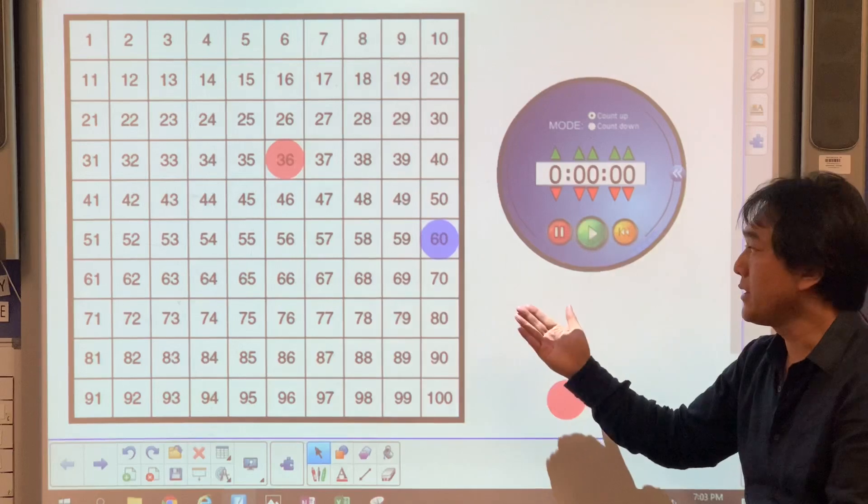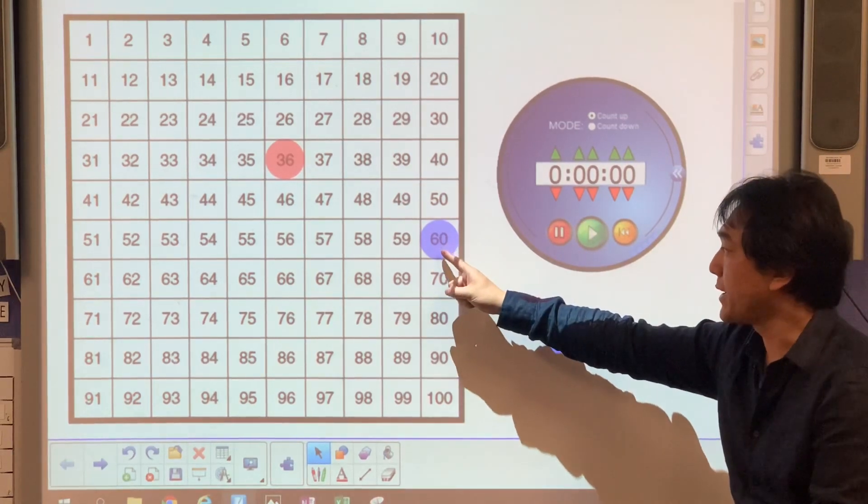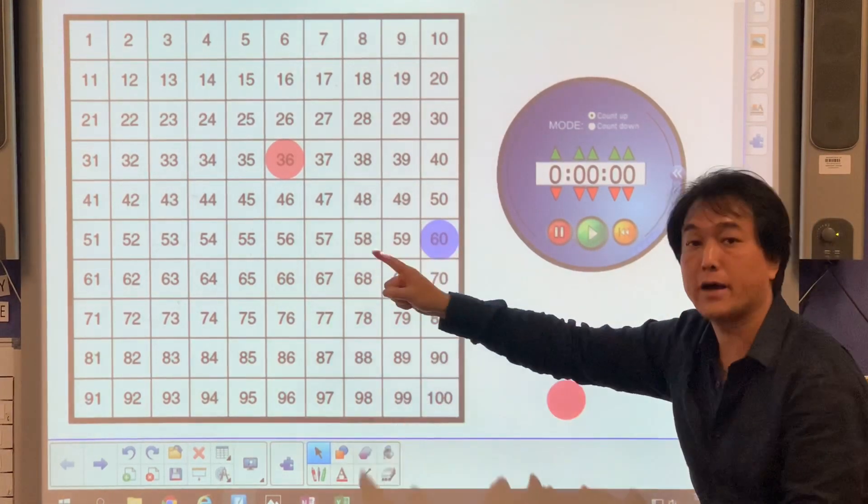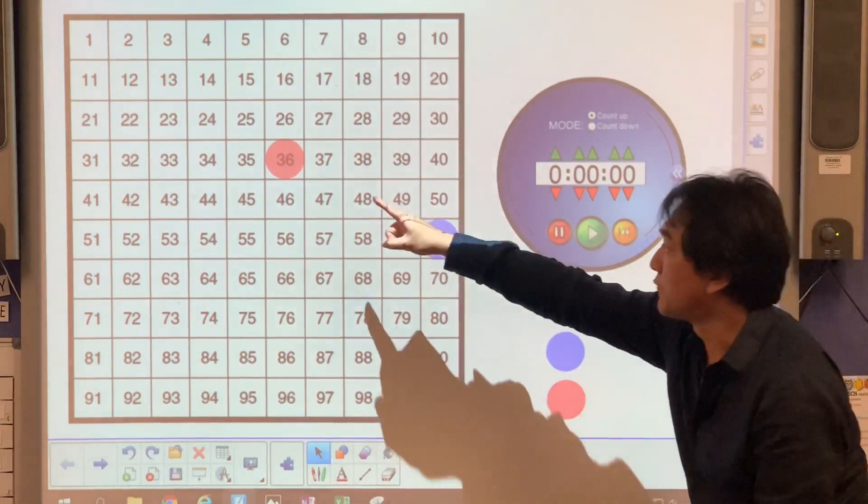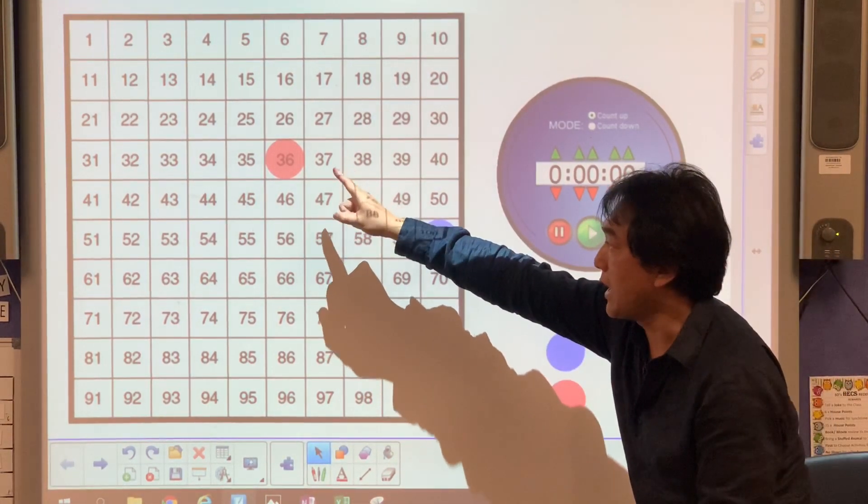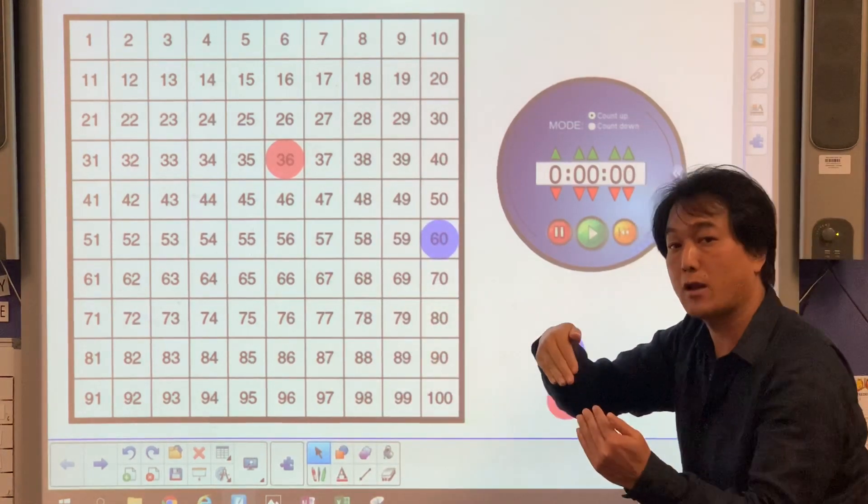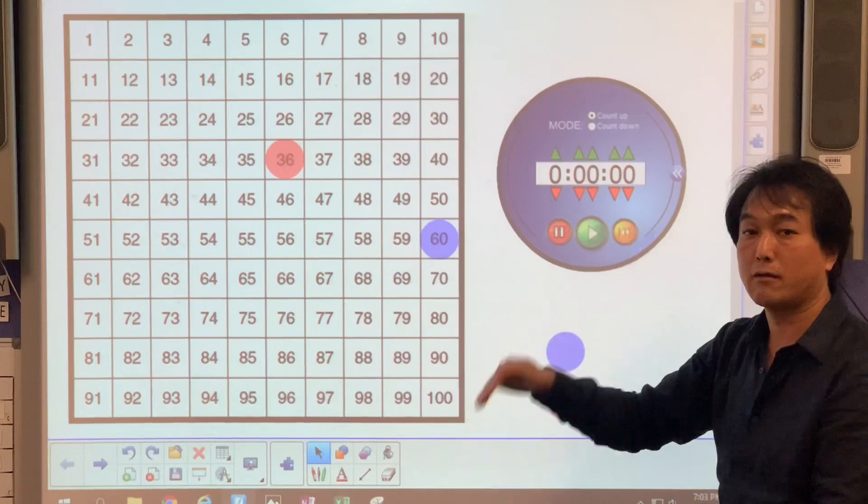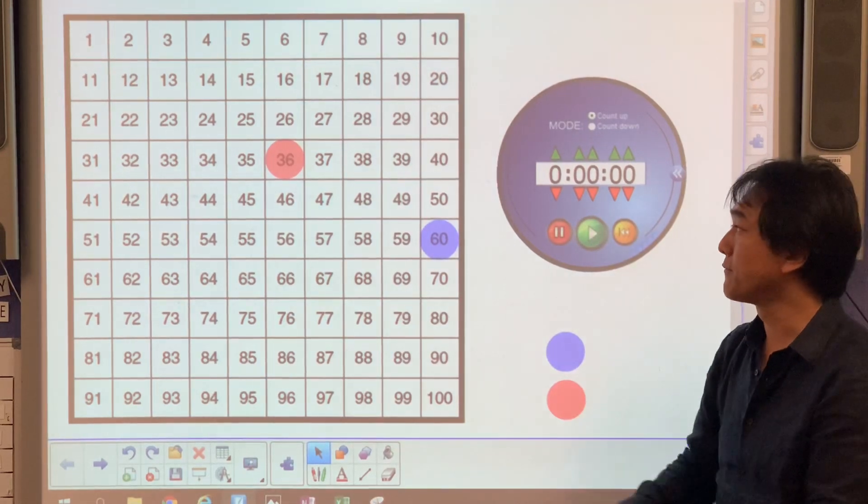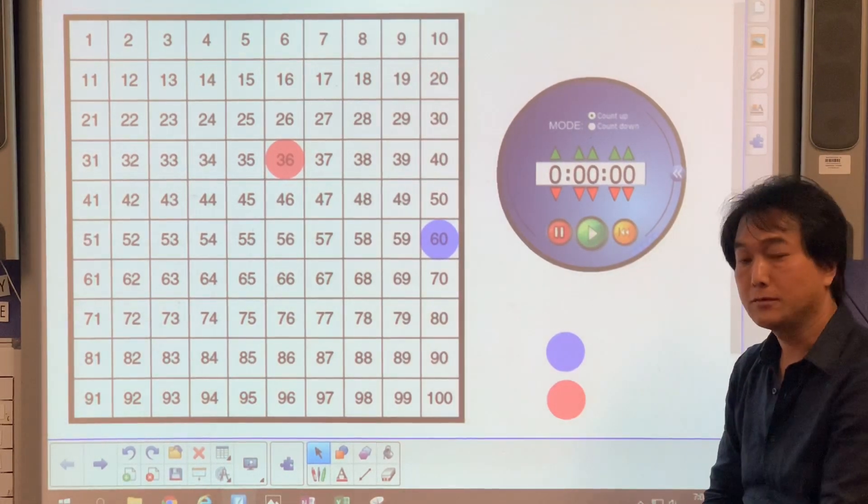To win the game, you have to make a long straight line. If I'm the red team from thirty-six, the aim is to make a straight line horizontally, vertically, or diagonally.